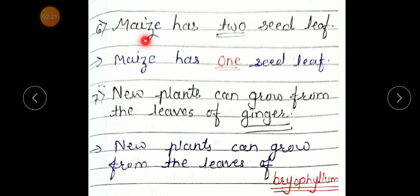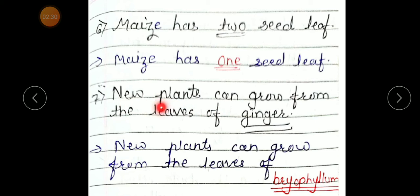Number 6: 'Maize has two seed leaves.' Correct statement: Maize has one seed leaf. Number 7: 'New plants can grow from the leaves of ginger.' Correct statement: New plants can grow from the leaves of dryophyllum.